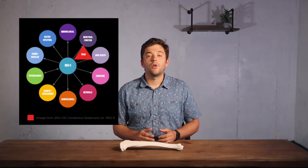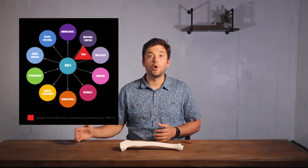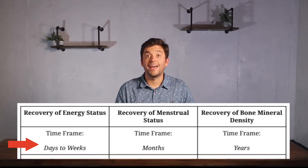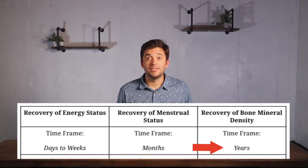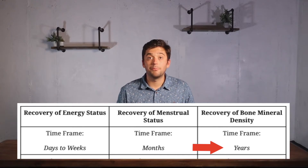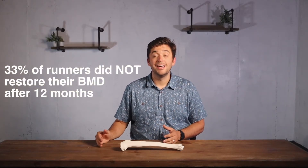Those are the general time frames to return to running, but there's another big variable: the athlete triad and the broader issue of relative energy deficiency in sport (RED-S) is a common factor in why these injuries happen and a roadblock to getting back to running. When we have low energy availability, it can take days to weeks to return energy status to normal. Hormone function can take weeks to months to restore. Bone mineral density can take years to completely return to normal — and sometimes it is worse after an injury like this. When Pope and colleagues followed runners after a tibial stress fracture for a year, they saw that 33% did not regain their full pre-injury bone mineral density.